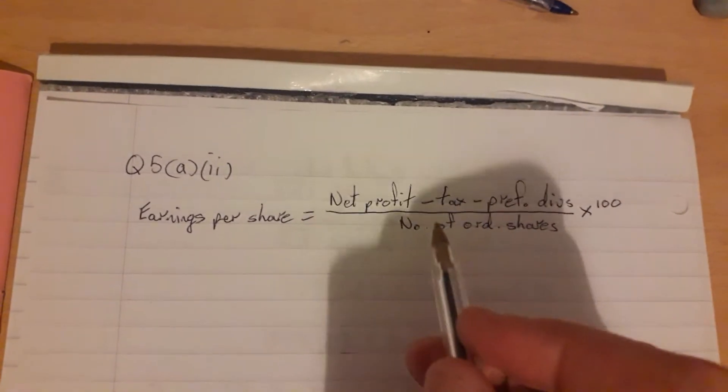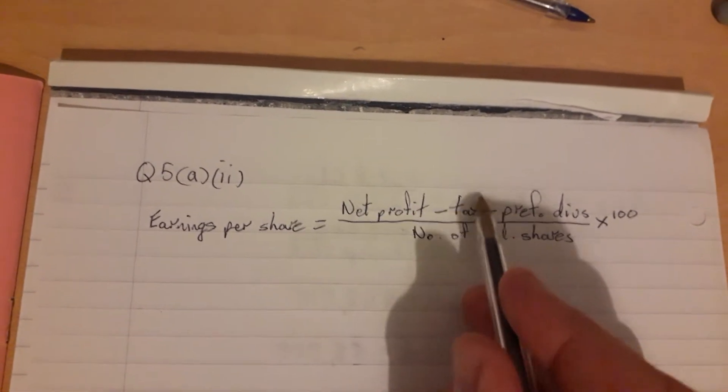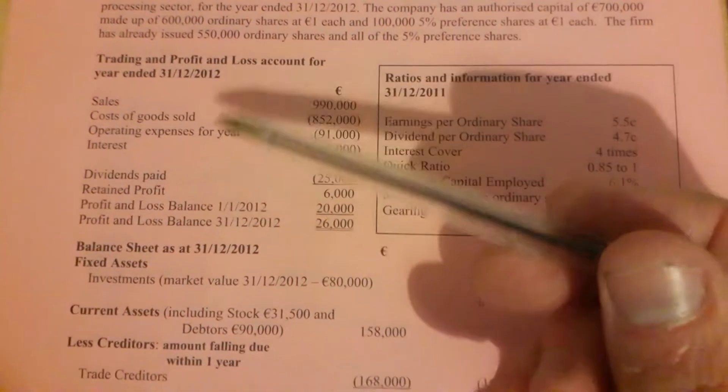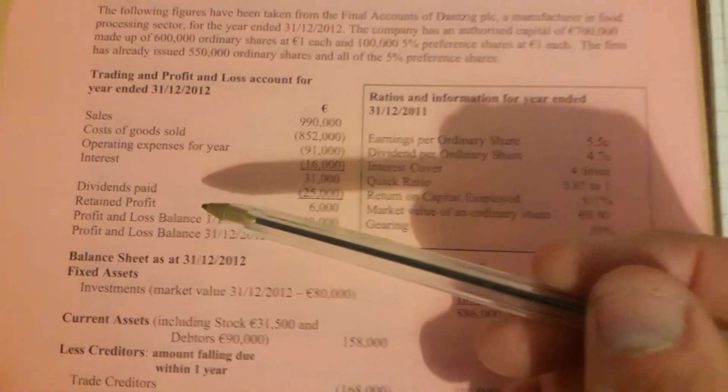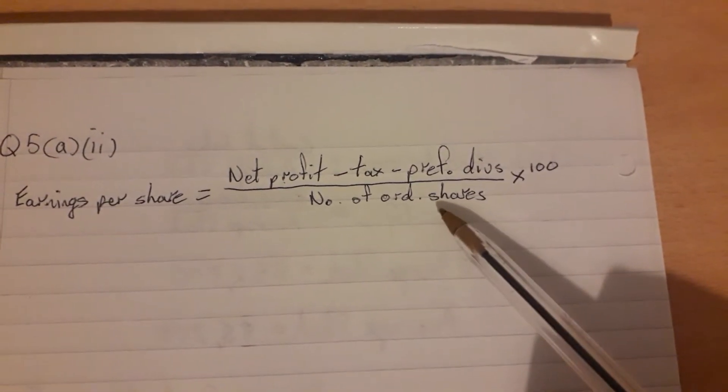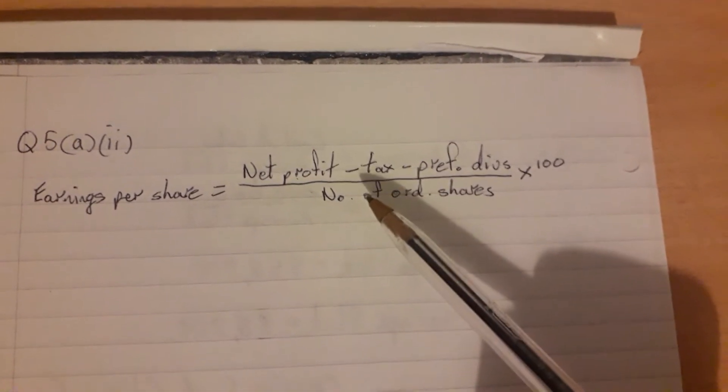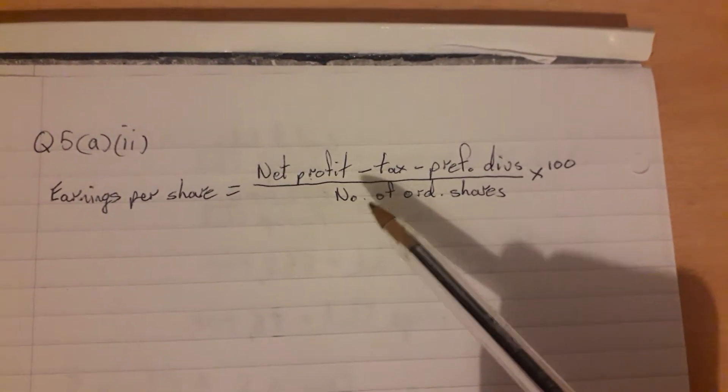First thing to say: net profit minus tax. Normally these questions to date, there's never been any tax included, so this really amounts to net profit minus preference dividends divided by number of ordinary shares. But I'll leave that in there just in case a question does come up someday and there is tax included in the trading profit and loss account.